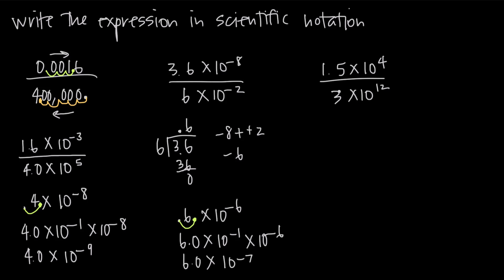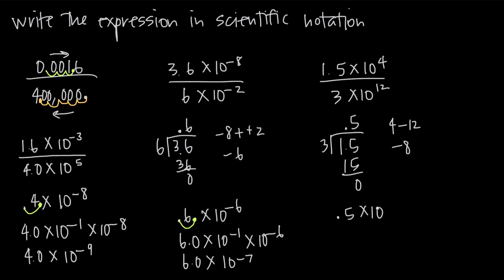For the last example, we do 1.5 divided by 3: 3 doesn't go into 1 but goes into 15 five times, giving us 0.5. Then 10 to the 4th divided by 10 to the 12th: numerator exponent minus denominator exponent is 4 minus 12, which is negative 8. So we have 0.5 times 10 to the negative 8. Moving the decimal one spot right gives us 5.0 times 10 to the negative 1 times 10 to the negative 8. Adding the exponents gives our final answer: 5.0 times 10 to the negative 9.